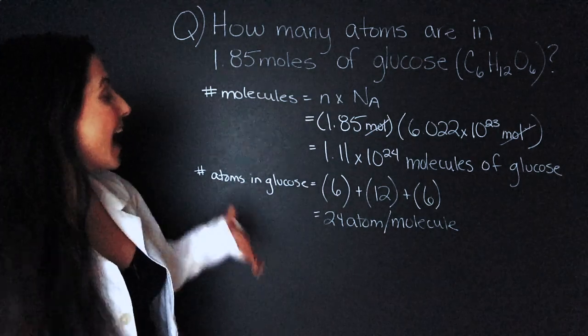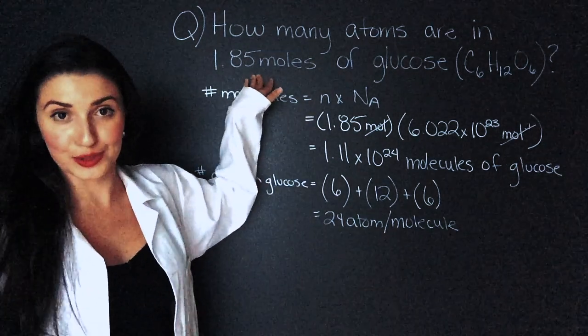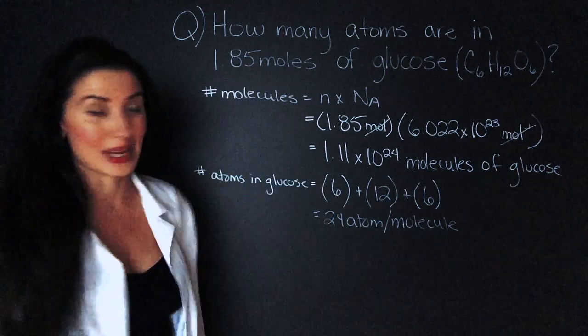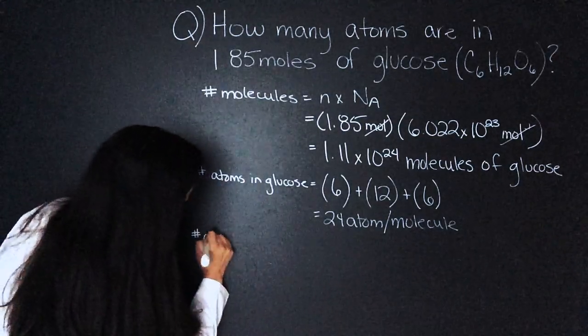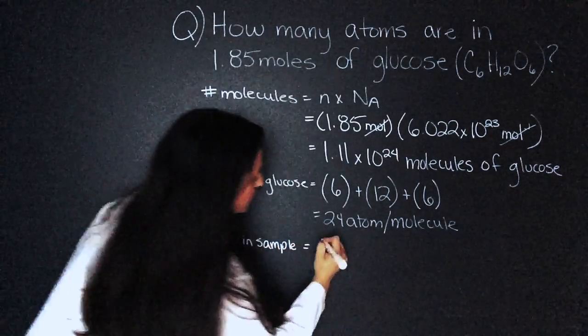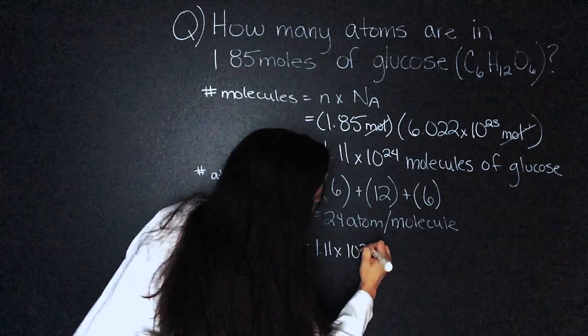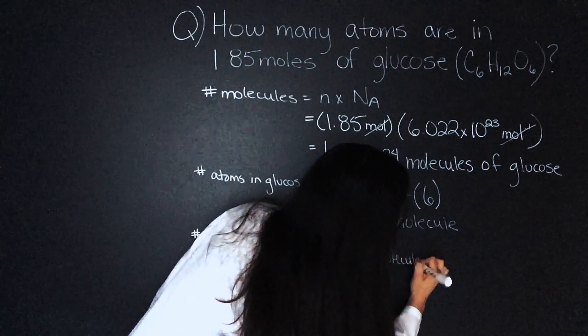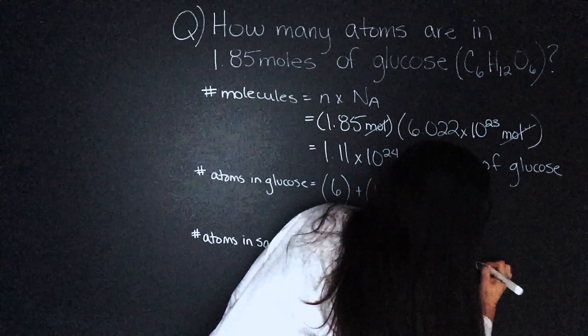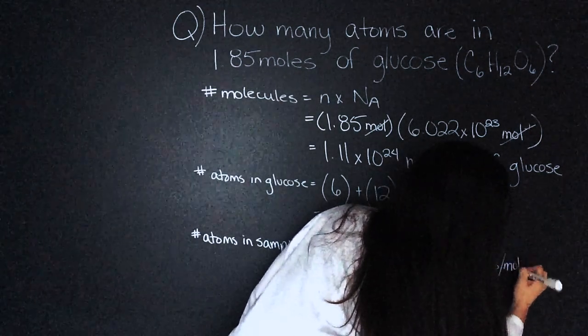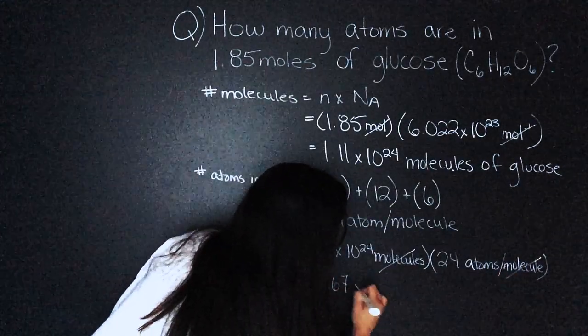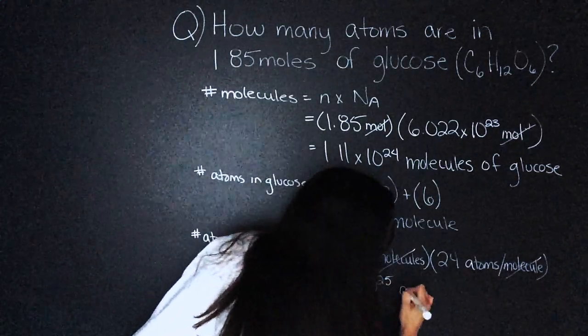Now the question asks how many atoms are in the sample of glucose. So we have to take our number of molecules multiply it by this and we'll get the number of atoms in the entire sample. So number of atoms in sample equals 1.11 times 10 to the 24 molecules times 24 atoms per molecule. Molecules cancel out and we're left with 2.67 times 10 to the 25 atoms.